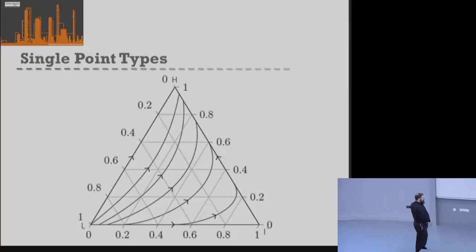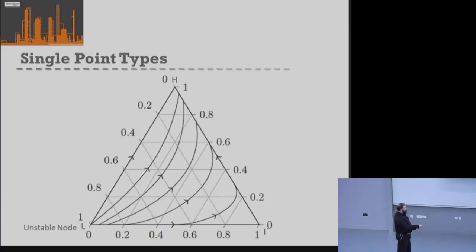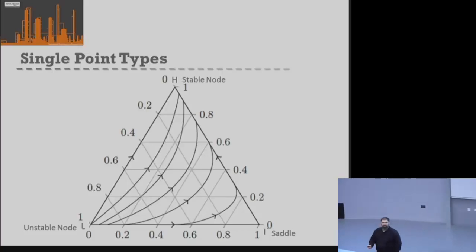Thinking about our zeotropic system: the component with the lowest boiling point has all residue curves pointing away from it, so it's an unstable node. The intermediate boiling component has some curves pointing towards and some away, making it a saddle. The highest boiling point component has all residue curves pointing towards it, making it a stable node. These types are identified just from the patterns of residue curves.